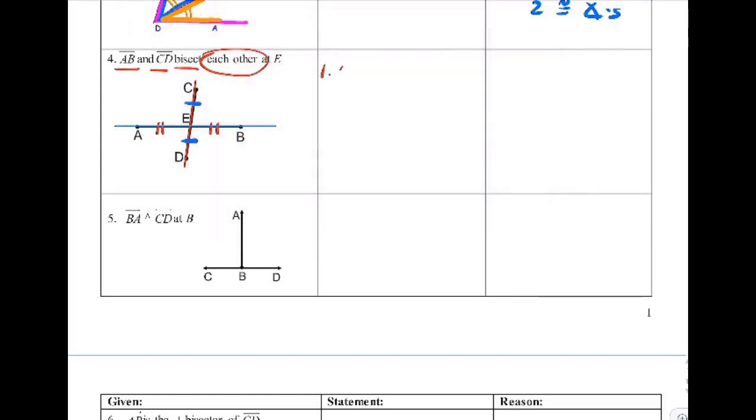The first thing they told us is our given: AB and CD bisect each other, and they said at point E. How did I know that? Because I read it. It was given.